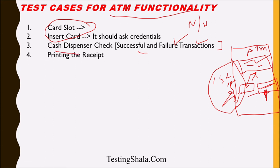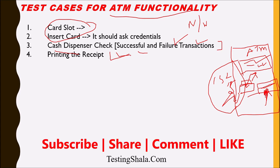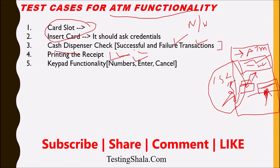The fourth test case is: when a user inserts a card to check their account balance and wants a printout, they insert the card, check the balance, and expect a receipt to print. The printer should be able to print the receipt without challenges. If the printer doesn't have paper, an appropriate error message should display on screen. If the printer and paper are both available, it should print the receipt successfully.